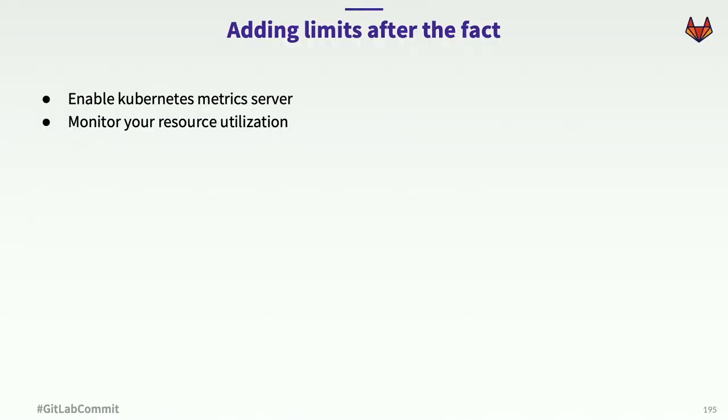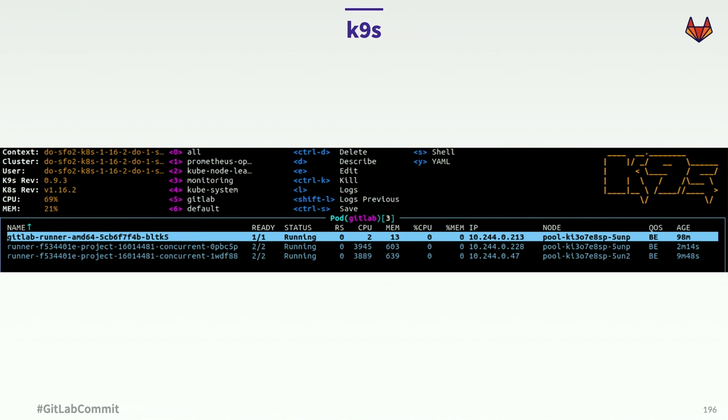Adding limits after the fact is in some ways easier than adding them before setting up a Kubernetes runner, although I wouldn't necessarily recommend it — this is what we did. We started with this Kubernetes runner when there were roughly 50 of us and 100 projects. To add limits after the fact, you enable the Kubernetes metrics server, then start monitoring your resources to determine what users are actually doing.